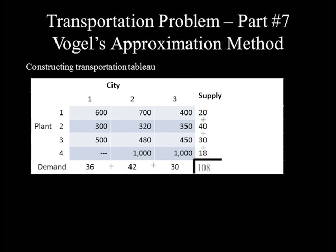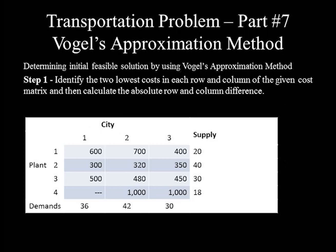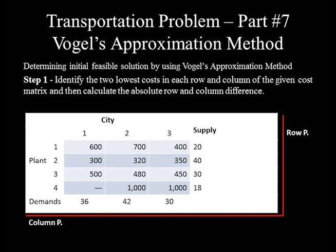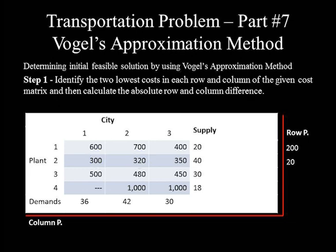We can now proceed to set the initial feasible solution following the steps of Vogel's approximation method. Step 1: identify the two lowest costs in each row and column and calculate the absolute row and column penalties. Row penalties are shown at the right-hand margin. Row 1: lowest cost 400, second lowest 600, difference = 200. Row 2: lowest 300, second lowest 320, difference = 20. Row 3: two least costs 450 and 480, difference = 30. Row 4: all costs equal 1,000, difference = 0.